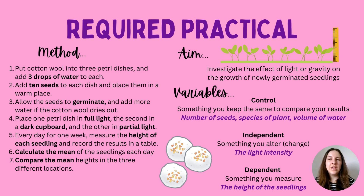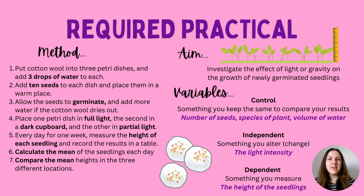There is a required practical for this topic: investigating the effect of light or gravity on the growth of newly germinated seeds. Germination means the seed has ended its dormancy and started to sprout. Place cotton wool into three petri dishes, add three drops of water to each, then add 10 seeds per dish. Place them in a warm space and allow the seeds to germinate, adding more water if the cotton wool dries out. Once sprouted, place one dish in full light, one in a dark cupboard, and one in partial light. Remove any seeds that haven't germinated and ensure equal numbers of germinated seeds in each dish as a control variable.